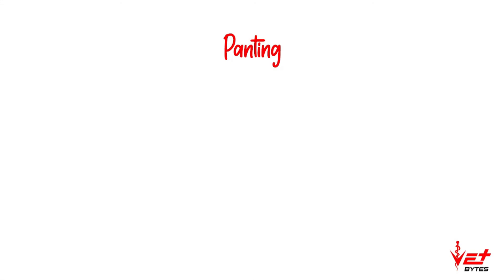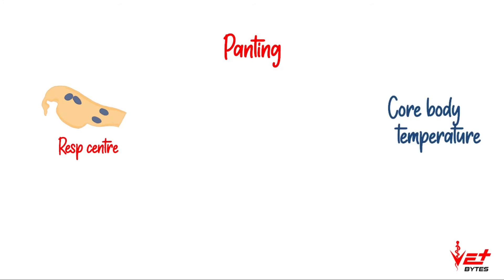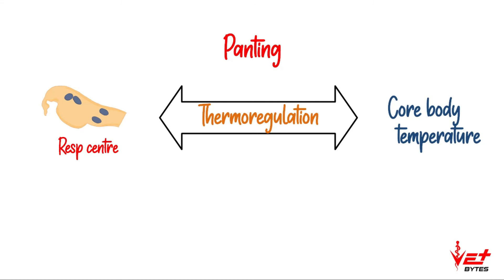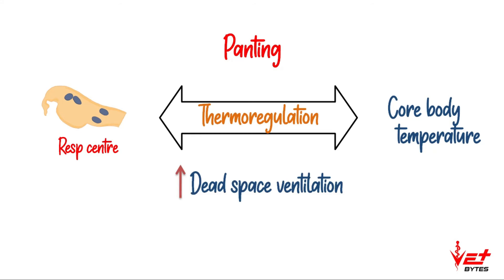Next, we'll see about panting. Panting is seen in many animal species but is more common in dogs. The respiratory center of the dog not only receives the usual stimuli but also receives signals according to the core body temperature, thereby helping in thermoregulation. If the body temperature increases, the respiratory center increases the dead space ventilation.